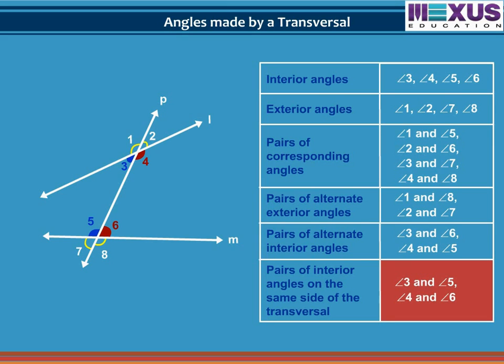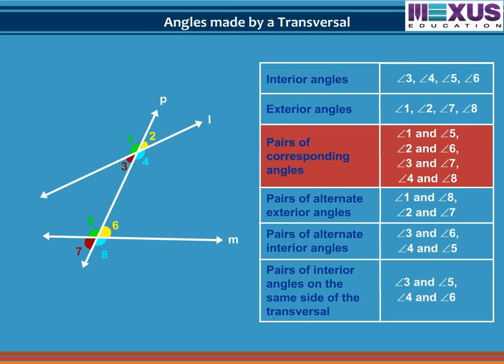Angles 3 and 5, and angles 4 and 6, are called pairs of interior angles on the same side of the transversal, as they lie inside the two lines on the same side of the transversal. Remember: corresponding angles have different vertices and are on the same side of the transversal in corresponding positions relative to the line. Alternate angles have different vertices and are always on opposite sides of the transversal, lying between or outside the lines.